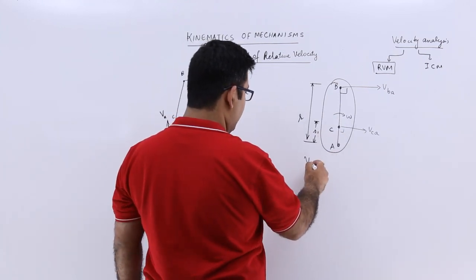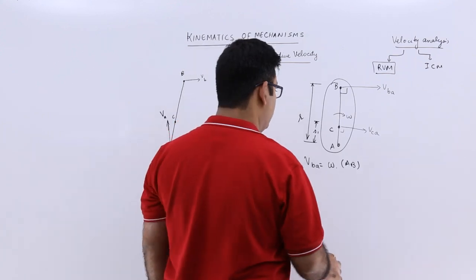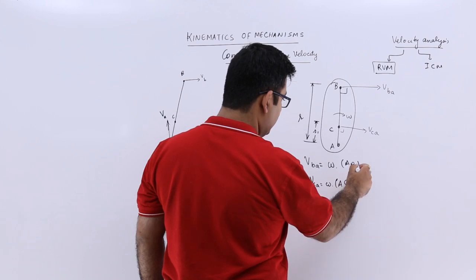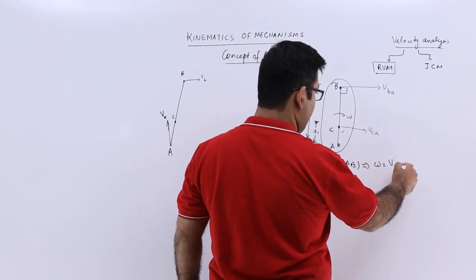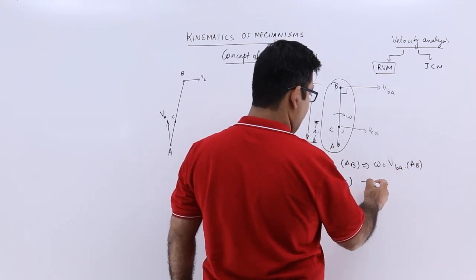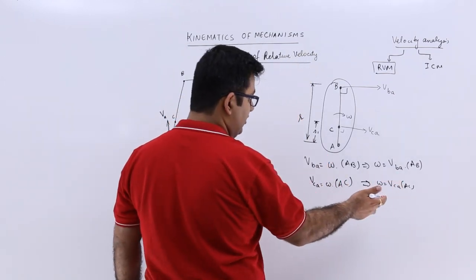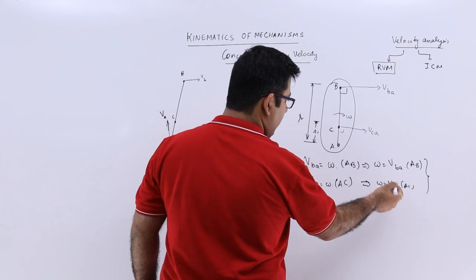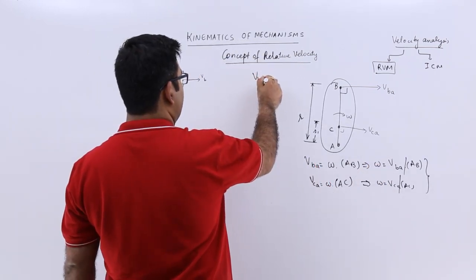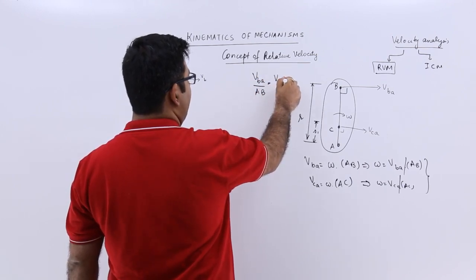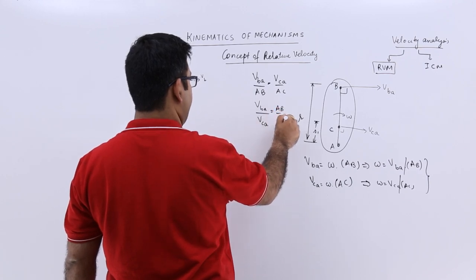We can write VBA = omega × AB, and VCA = omega × AC. Solving for omega from both expressions and equating them gives us VBA / AB = VCA / AC. This is the key proportionality relationship for points on the same link.